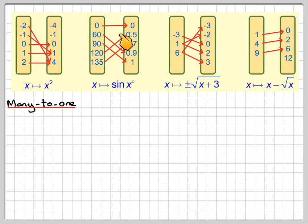In the second one, each one maps onto one separate one. So this is called a one-to-one.